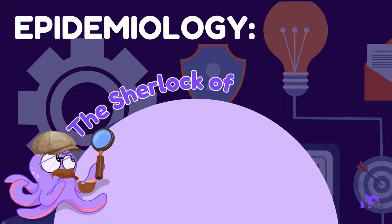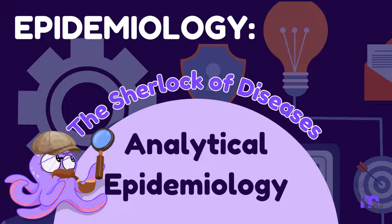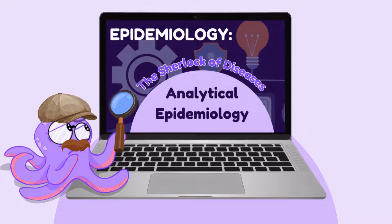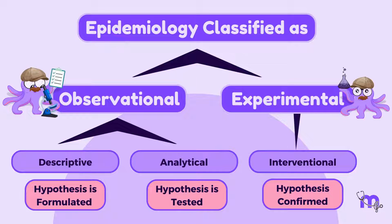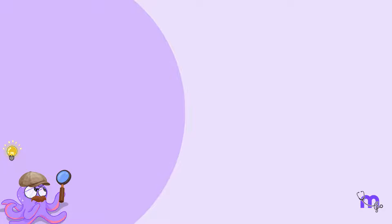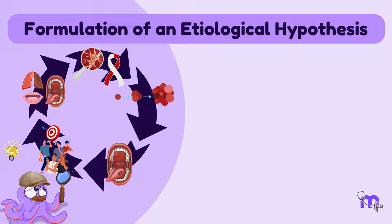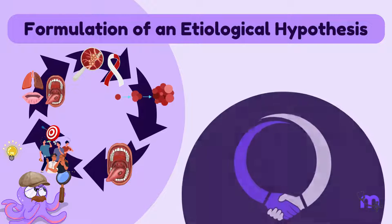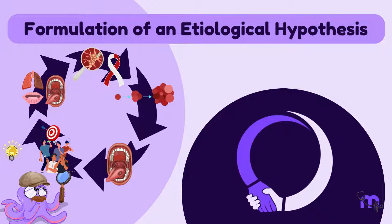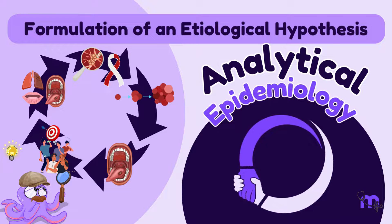Welcome to another session on Epidemiology. Let's have a quick glance at the three main categories of Epidemiology. In our previous video, I discussed how I use descriptive epidemiological studies to formulate the hypothesis. My next step is to test the hypothesis to find relevant associations, and this is done using analytical epidemiology.